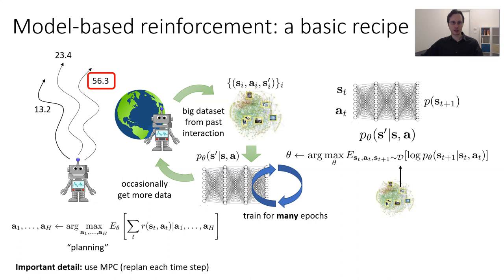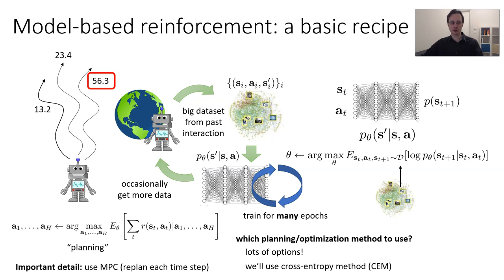An important detail is that you really want to re-plan every time, because if your model is not correct, you won't get quite the outcome you expected. So if you re-plan every time step, you'll do a little bit better. An important question is which planning or optimization method to use — there are lots of options, from linear quadratic regulators to RRTs, PRMs, etc. In all the work I'll discuss today, we're going to use a derivative-free optimization technique called the cross-entropy method, or CEM. We actually introduced this to the world of deep model-based RL roughly three years ago, mostly because we were too lazy to implement anything more sophisticated. Unfortunately, the idea has stuck, and there are quite a few papers that use CEM these days. It's not by any means the best method — it's just the easiest to implement — but it's actually good enough for many of the things I'll discuss.